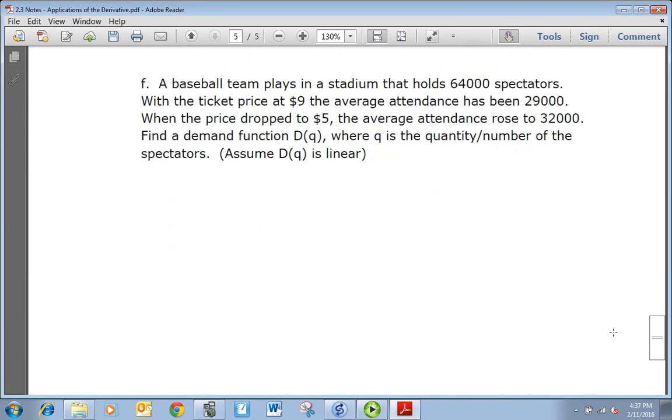Part f: A baseball team plays in a stadium that holds 64,000 spectators. With the ticket price at $9, the average attendance has been 29,000. When the price dropped to $5, the average attendance rose to 32,000. Find a demand function D(q), where q is the quantity/number of spectators. We're going to assume that D(q) is linear. So essentially what we've been given are two coordinates. The demand function or the price, so D(q) is going to be your price and q is the quantity or the number of spectators. So we want to write our two coordinates according to who is the independent variable and who's the dependent.